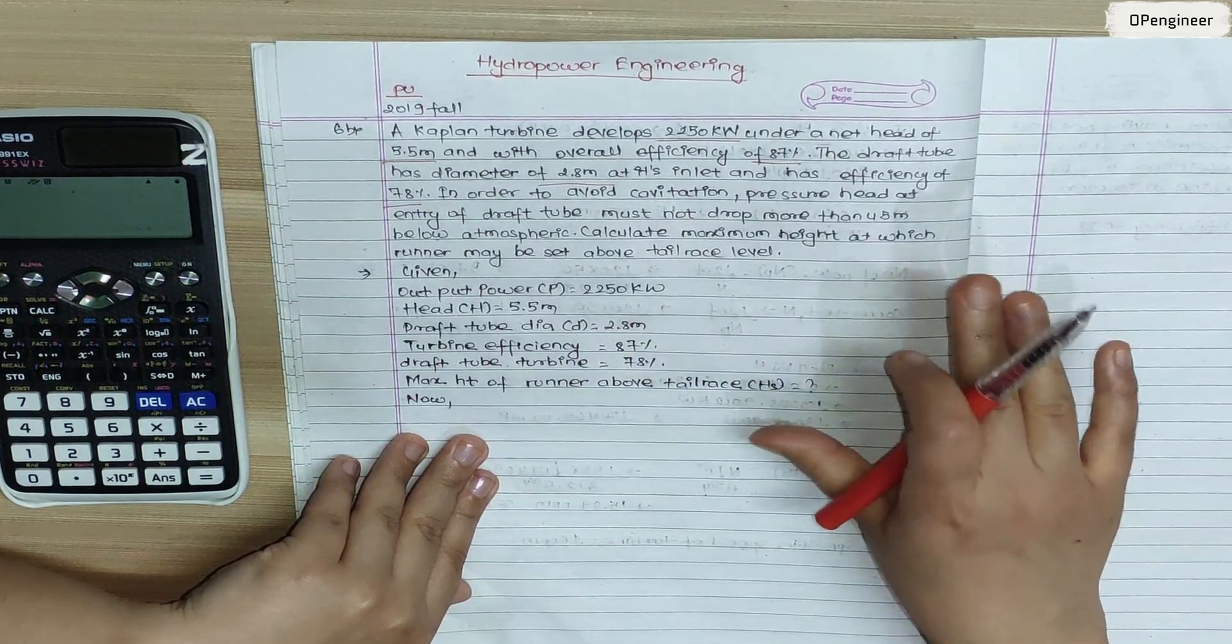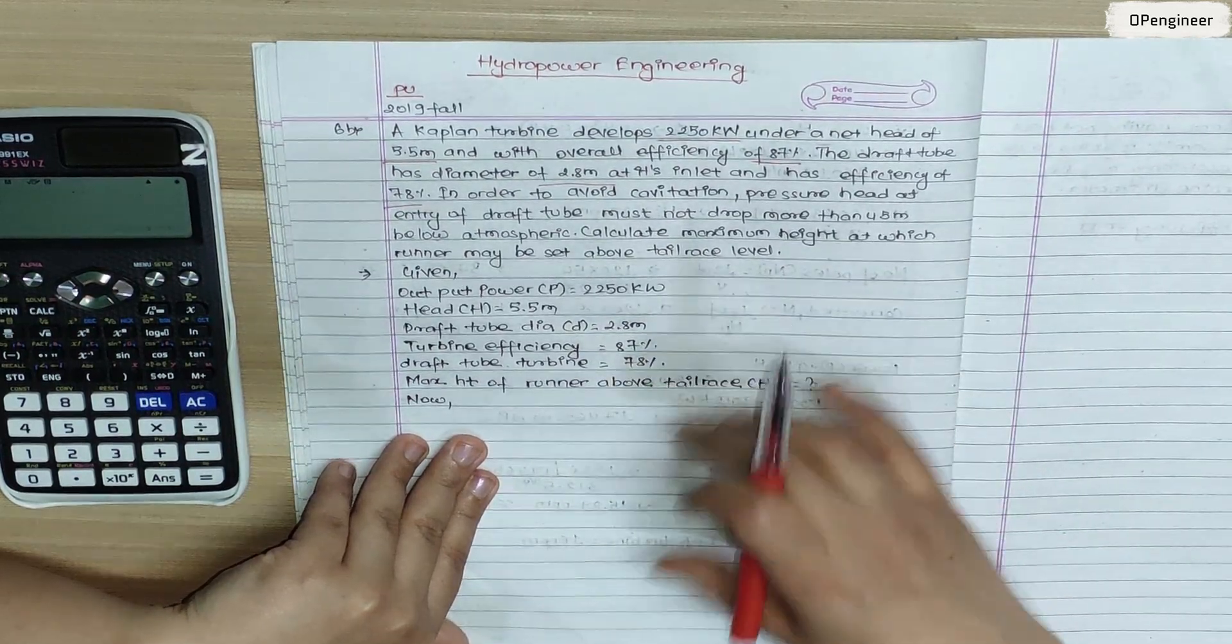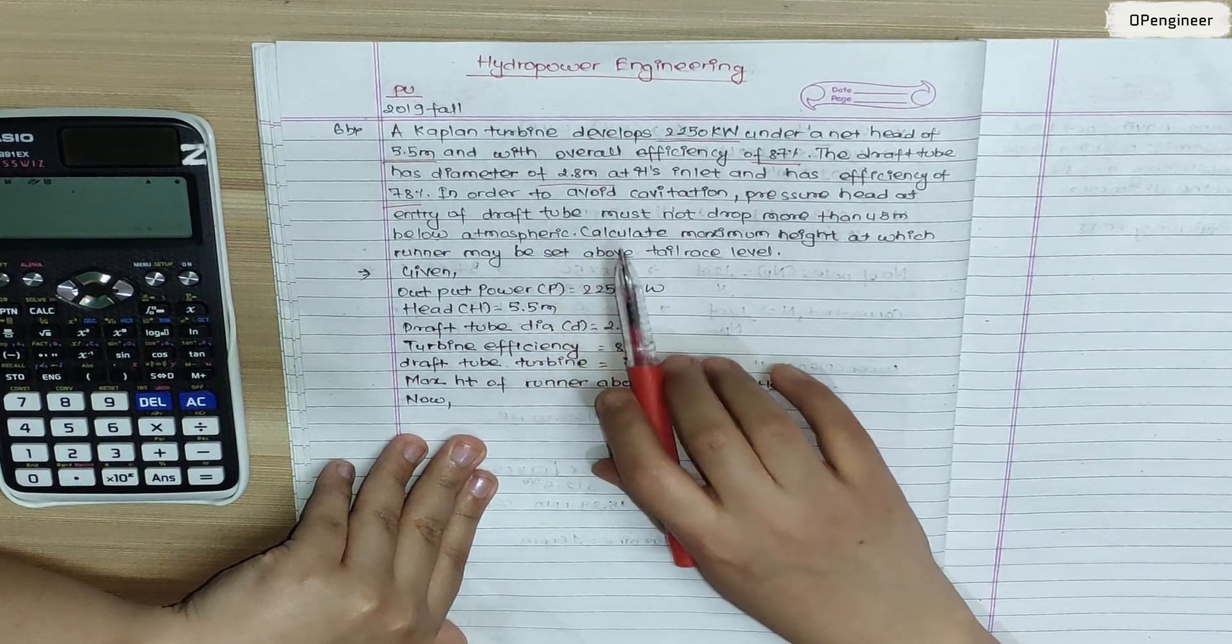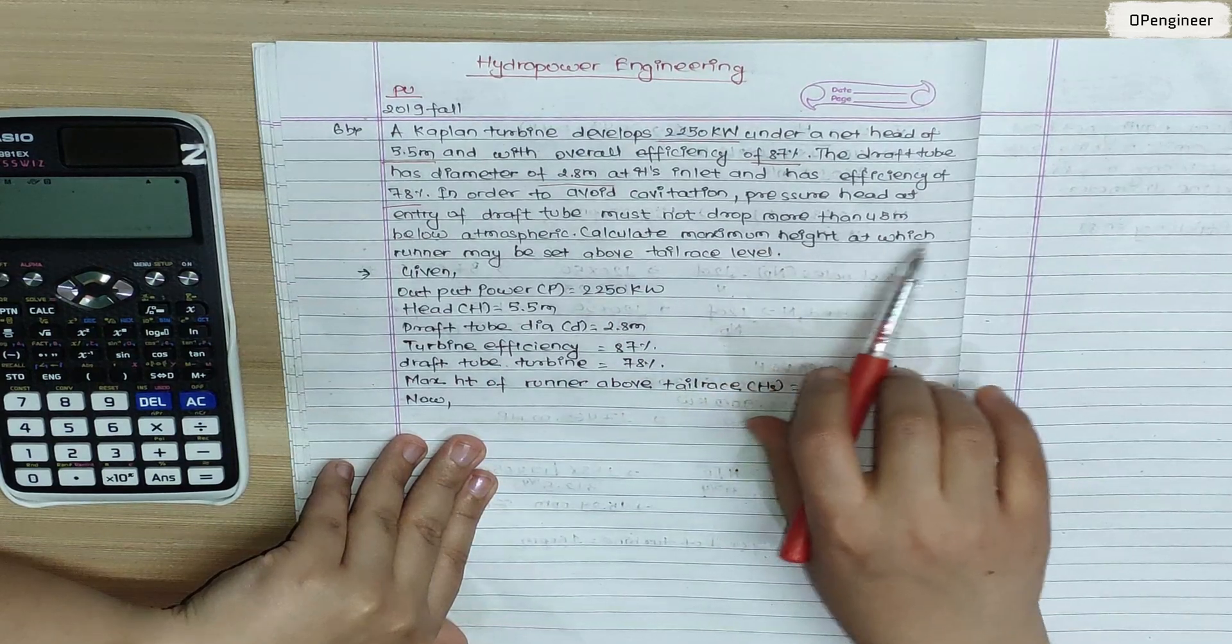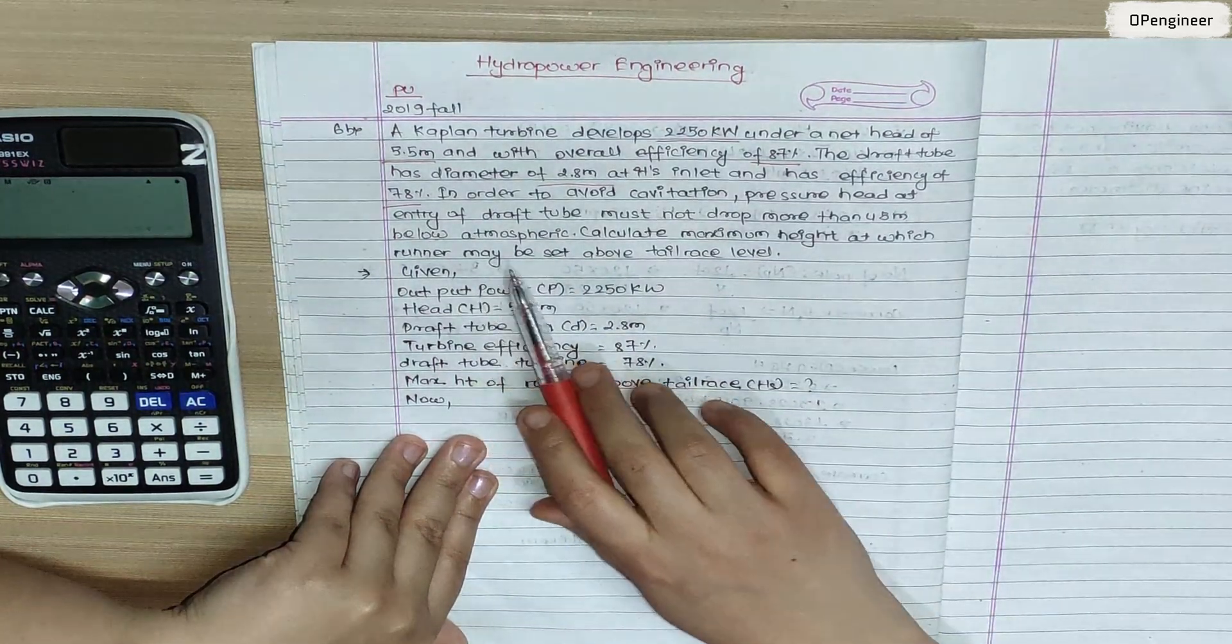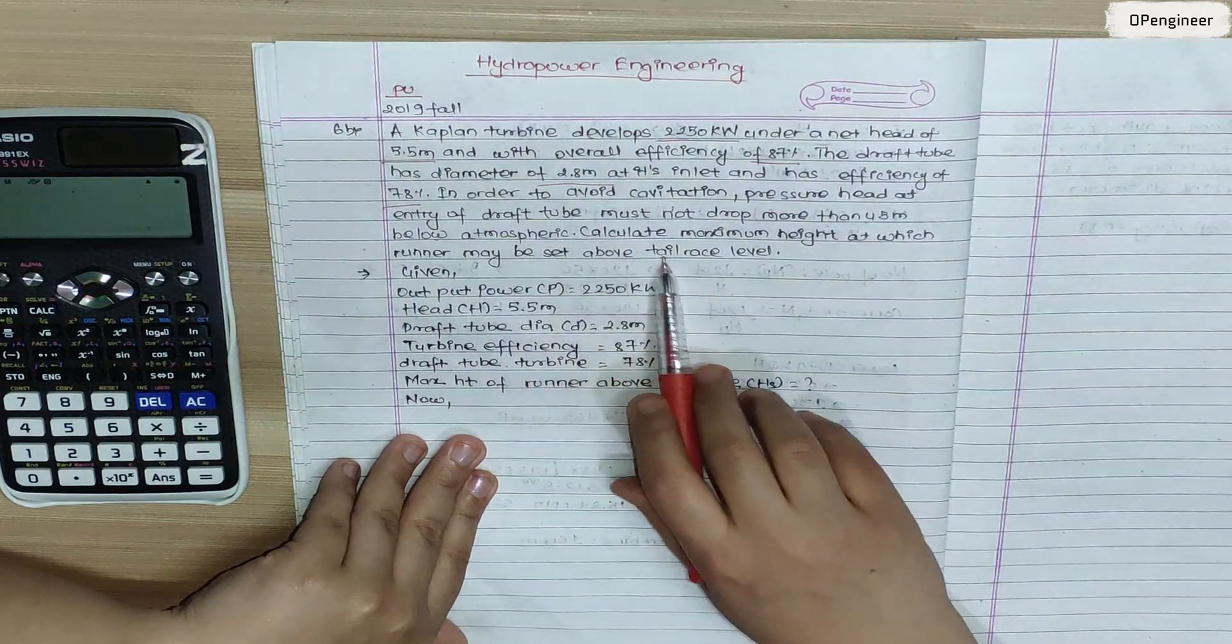Cavitation at the entry of draft tube must not drop more than 4.5 m. Calculate maximum height at which runner may be set above tailrace level. I am going to calculate the maximum height of runner above tailrace.